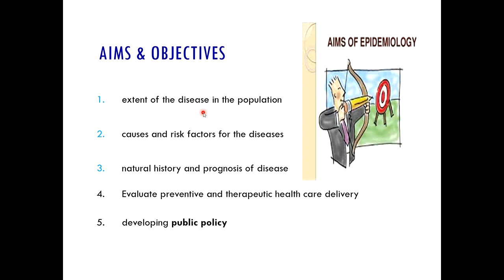The aims of epidemiology are: to know the extent of the disease, what are the causes and risk factors, to know the natural history and prognosis of disease, and to evaluate what preventive strategies and therapeutic healthcare delivery services are available. For example, in corona, therapeutic healthcare delivery has involved a large number of drug trials — hydroxychloroquine was tried, then ivermectin, then the role of steroids was considered. All these decisions about preventive and therapeutic healthcare deliveries are based on data generated from patients. Then public policies are made by the epidemiologist.